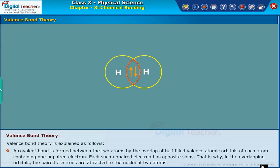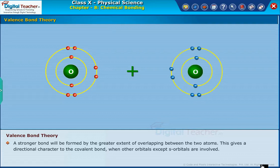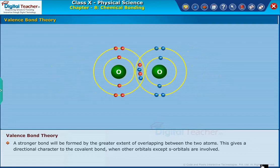That is why in the overlapping orbitals, the paired electrons are attracted to the nuclei of two atoms. A stronger bond will be formed by the greater extent of overlapping between the two atoms.